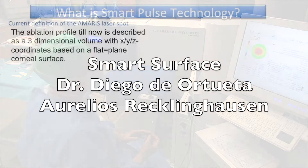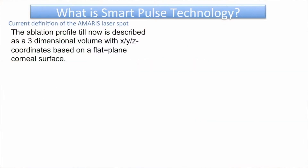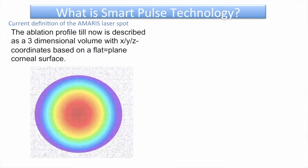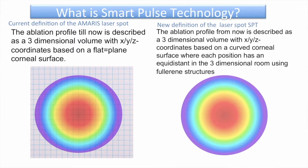The normal ablation profile describes a three-dimensional volume based on a flat corneal surface with the Smart Pulse Technology (SPT) profile. The SPT volume is based on a curved corneal surface where each ablation point is equidistant, using a fullerene structure.